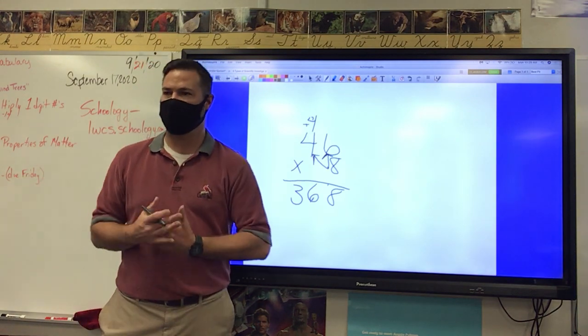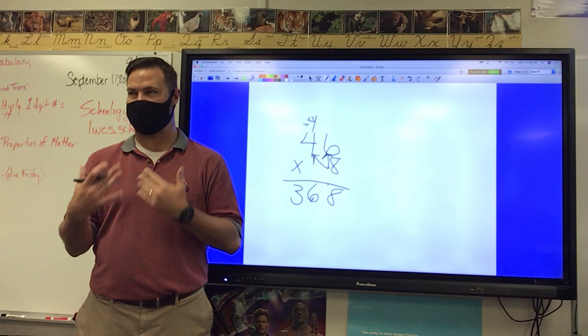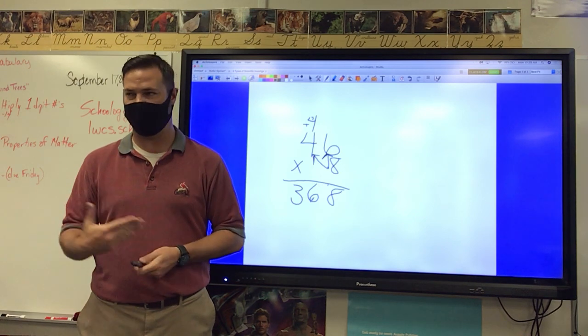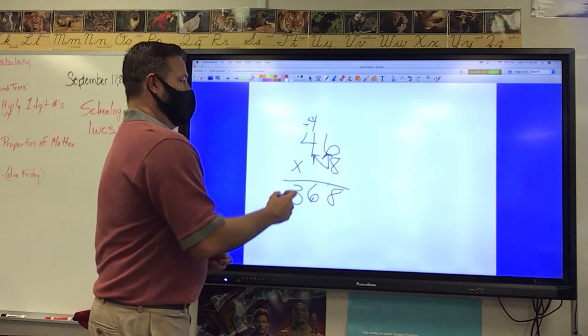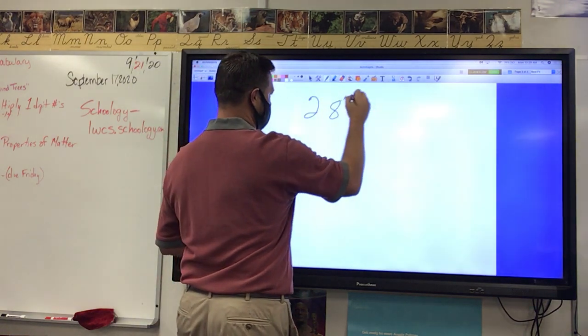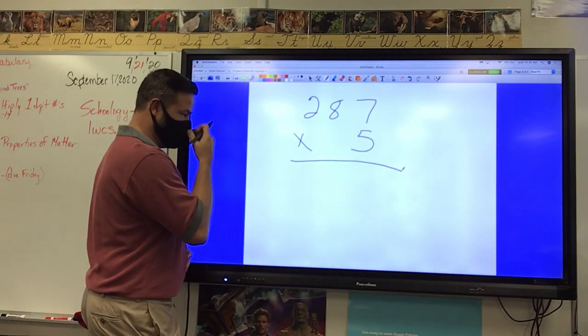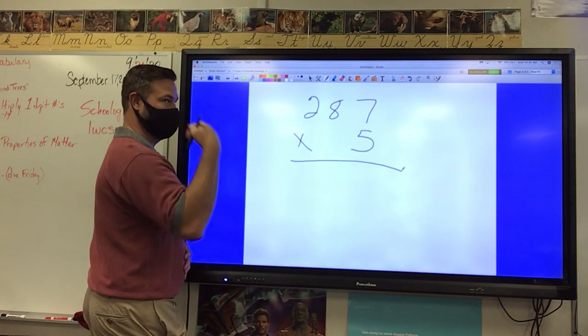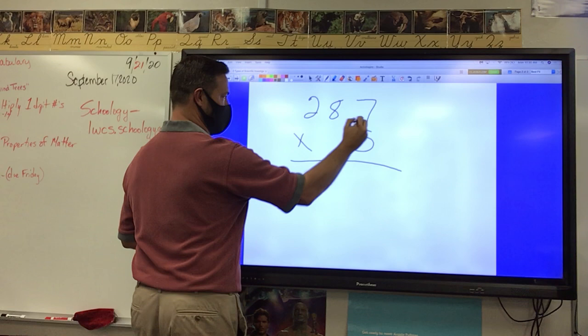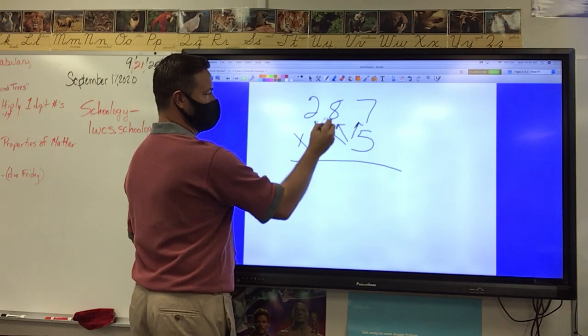Now, most of you are saying, okay, yeah, I remember this, I got this, but we're gonna do a quick refresher here. We're gonna practice them today because this is gonna be very important later. If I had a three-digit number, what am I gonna multiply first? Five times seven, then what? Five times eight, then what? Five times two.